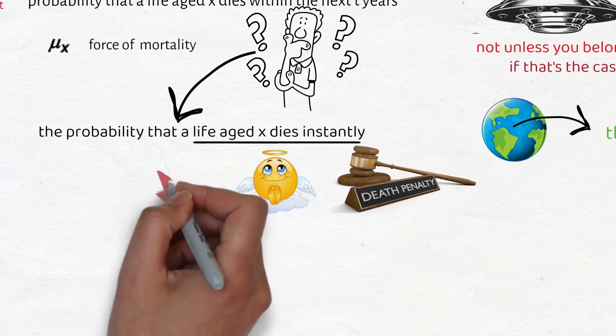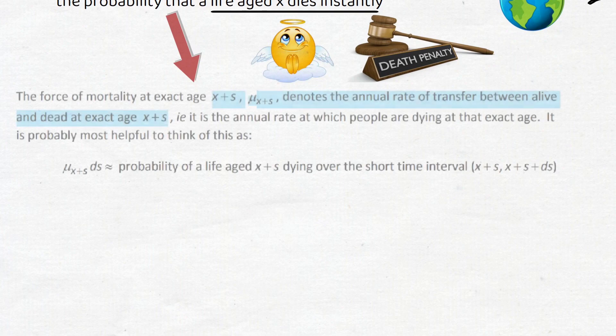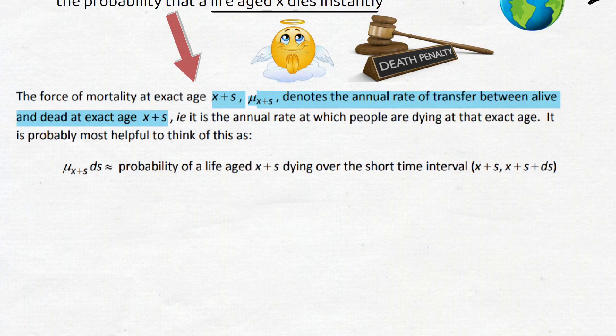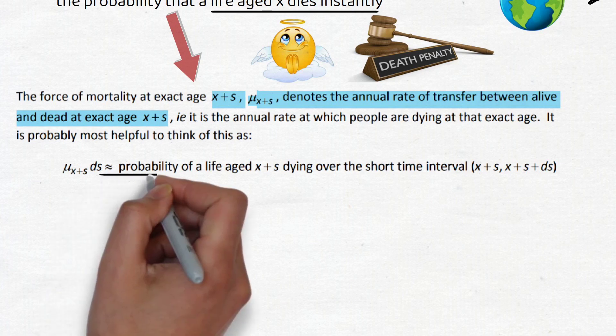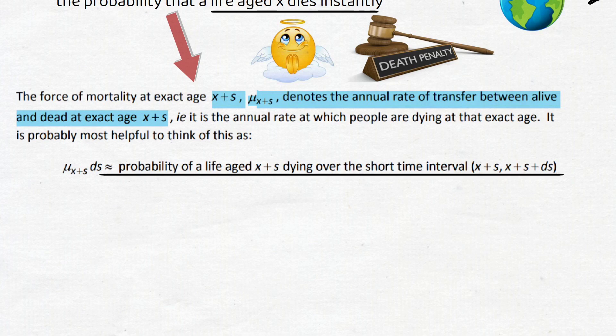But then in the notes this is how they put it. They say the force of mortality at exact age x plus s denotes the annual rate of transfer between alive and dead at that exact age. So it is the annual rate at which people are dying at that exact age. And then they do say that it's helpful to think of that probability by saying that it is the probability that the life aged x plus s dying over the short time interval from when they are x plus s to x plus s plus a couple of minutes, that ds. That's the couple of minutes I was talking about.